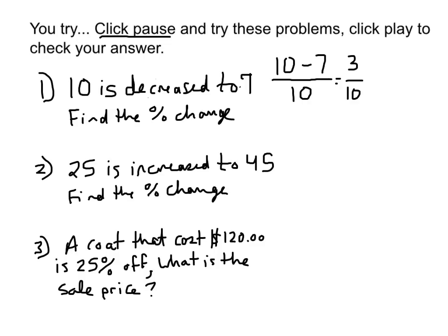3 tenths, if I want to convert this into a percent, I could multiply the denominator and the numerator by 10 to make it so it's out of 100, is 30 one hundredths. 30 one hundredths, also known as 30%.